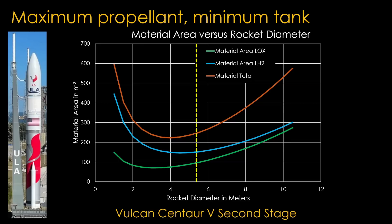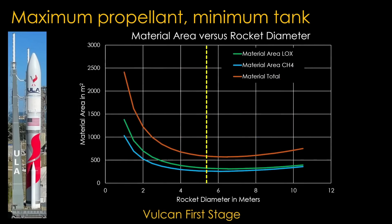Here's the second stage for Vulcan. It's 5.4 meters in diameter, so it's about 10% bigger than the optimal size. Its optimal size is actually pretty close to the Falcon 9 diameter. If we look at the first stage, which burns liquid methane and liquid oxygen, the diameter of Vulcan is pretty much the optimal size.